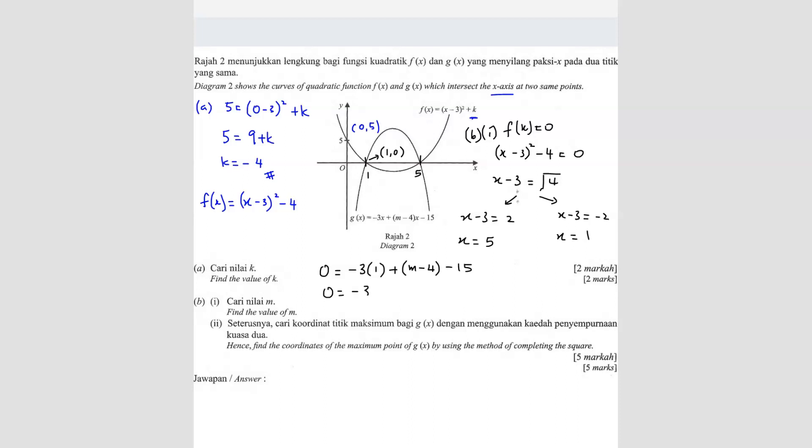So 0 equals -3. What we can do is -3 can combine with the 15, right? So you get -3 - 15, which is -18. So 18 equals m - 4. So m equals 22.